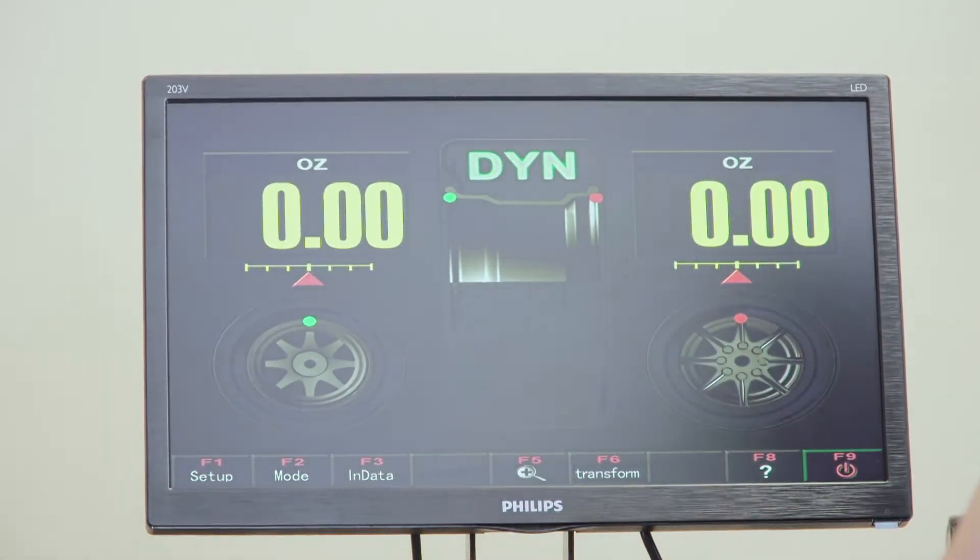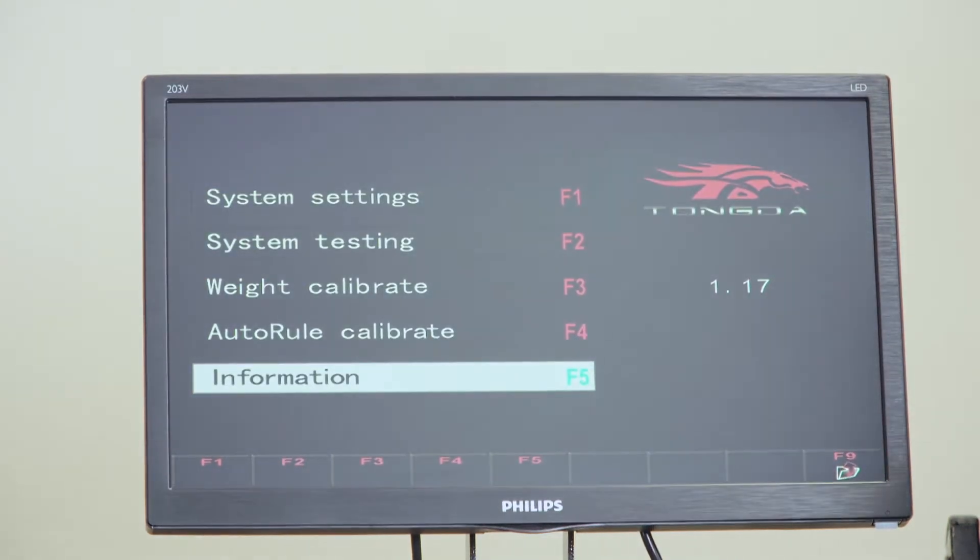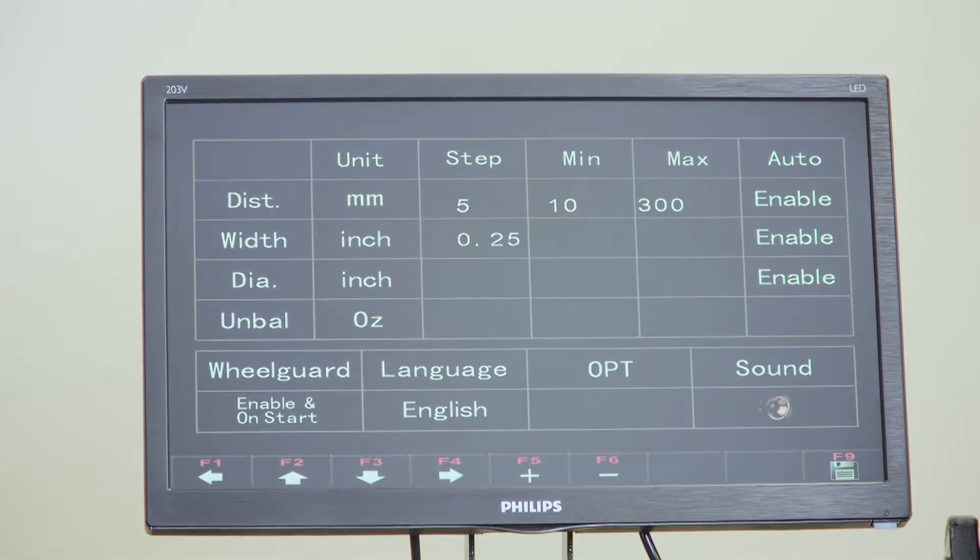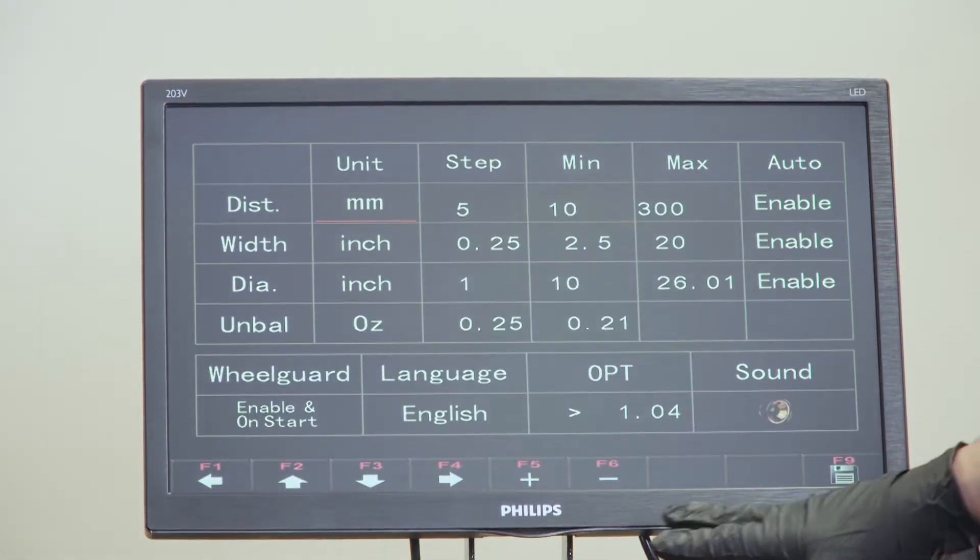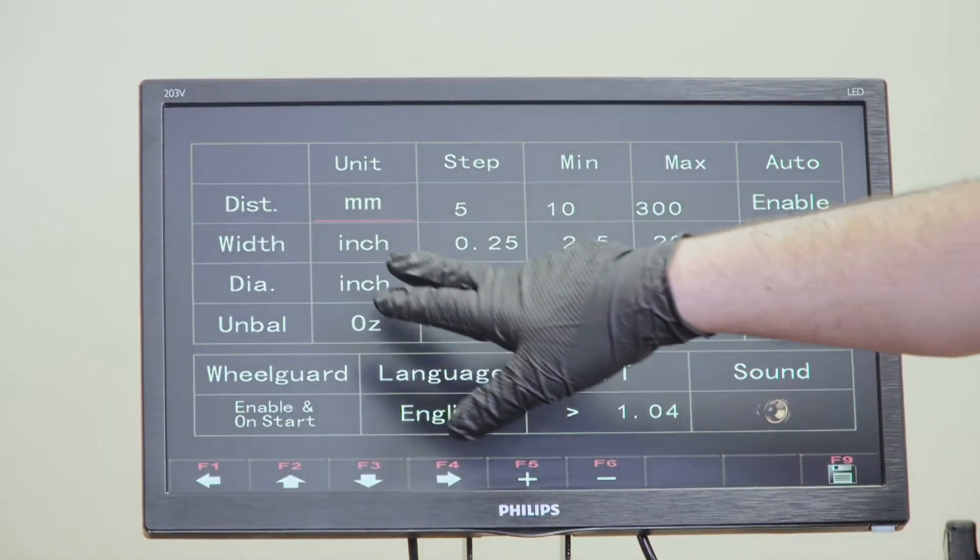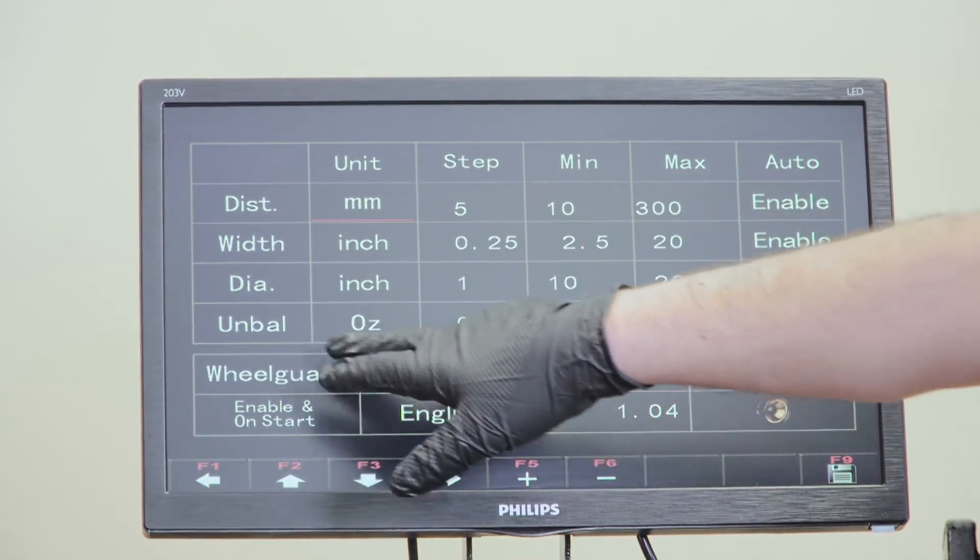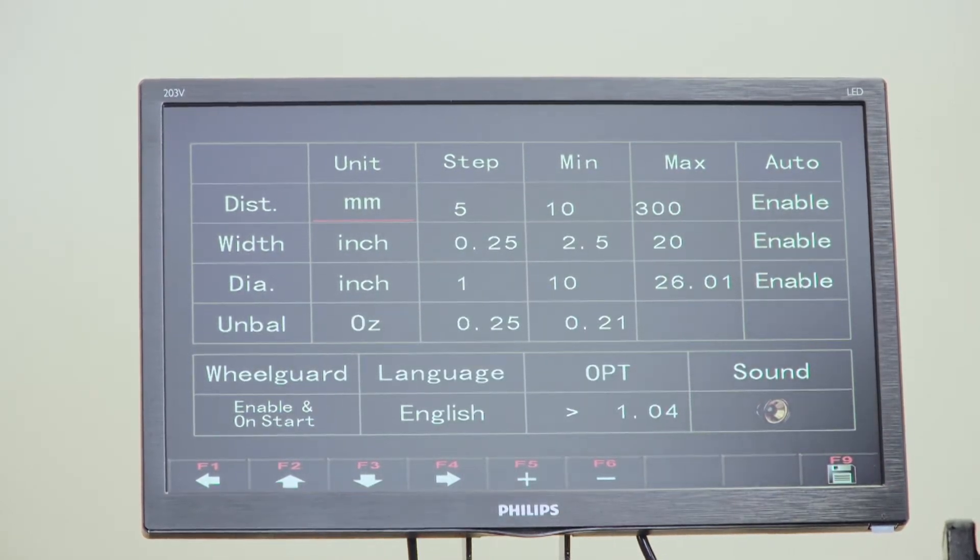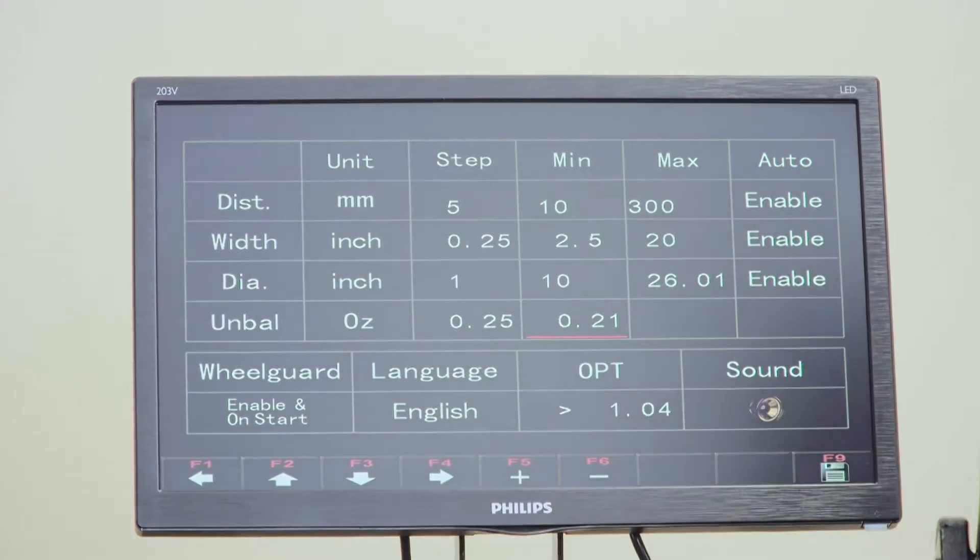So we're going to go with F1 system settings, F1 again. When you receive the machine, you're going to see everything here. This one is going to be in grams, not ounces.